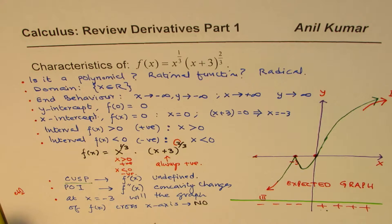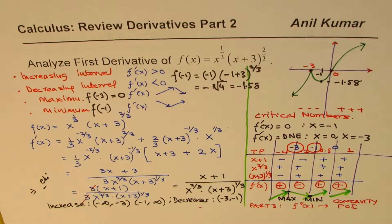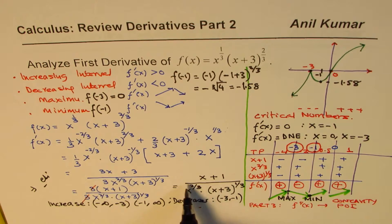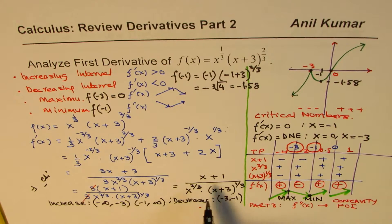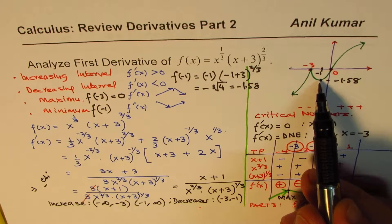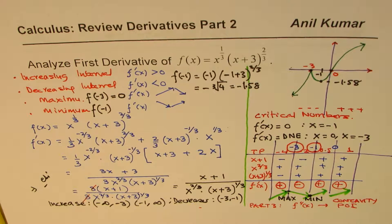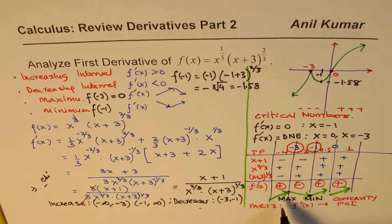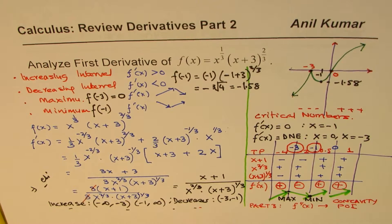That estimated sketch was a very accurate assumption. In Part 2 we learned about the first derivative of this particular function. We found the first derivative: (x + 1) divided by x to the power of 2/3 times (x + 3) to the power of 1/3. We also found a local maximum at x = -3, a local minimum at x = -1 with value negative cube root of 4, and the intervals for increasing and decreasing were also found.